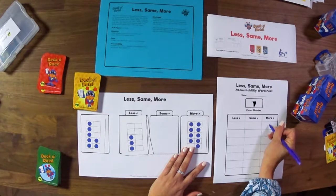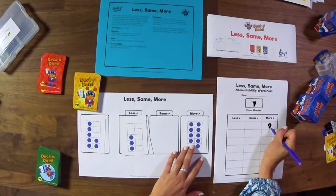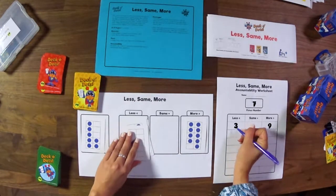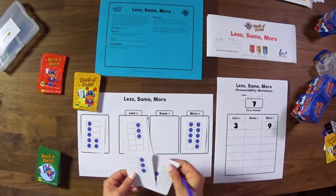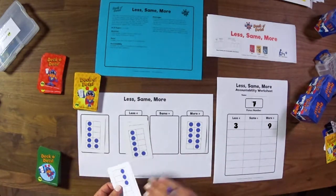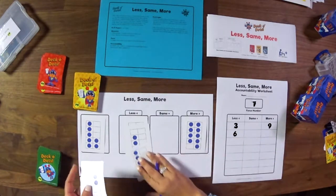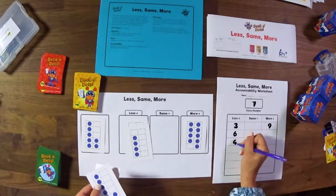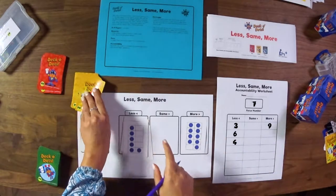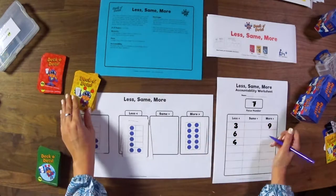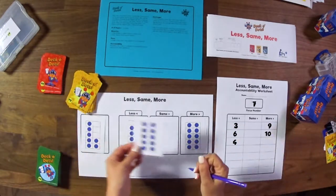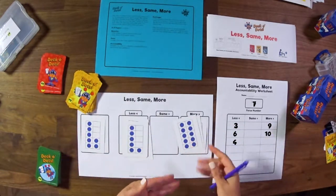So far in the more category, I have the number 9. Over here, I've had the number 3. I had the number 6. So anytime a number comes up, they can put that here to show that that number is less. They'll continue sorting until the whole entire deck is sorted into same, less, more.